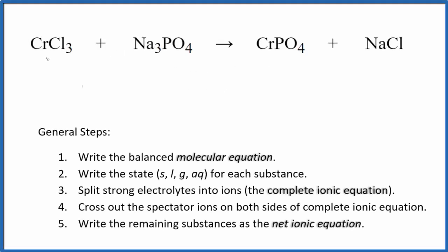Let's write the balanced net ionic equation for chromium chloride plus sodium phosphate. The first thing we need to do with net ionic equations is balance the molecular equation. I can see there are three sodium atoms here and just one here, so I'm going to put a three in front of the NaCl.